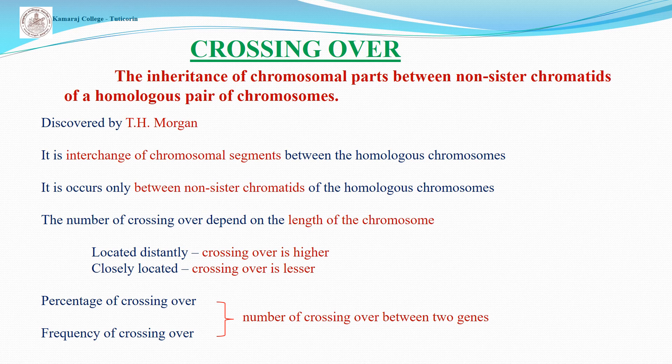Crossing over is defined as the interchange of chromosomal parts between non-sister chromatids of a homologous pair of chromosomes. It was discovered by T.H. Morgan. Crossing over is the interchange of chromosomal segments between homologous chromosomes and it occurs during meiosis. Crossing over occurs only between non-sister homologous chromosomes. The number of crossovers depends upon the length of the chromosomes — the longer the chromosome length, the higher the percentage of crossing over.